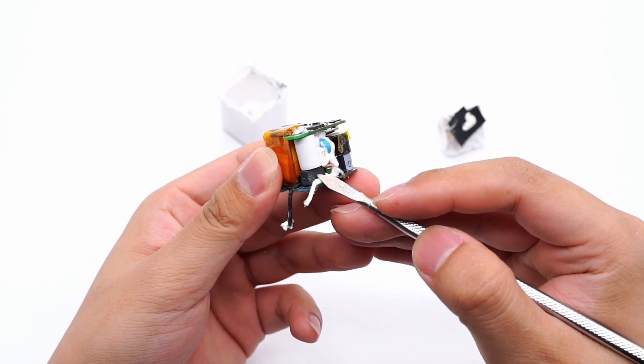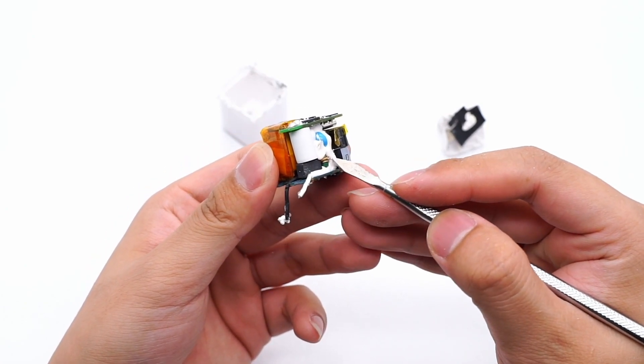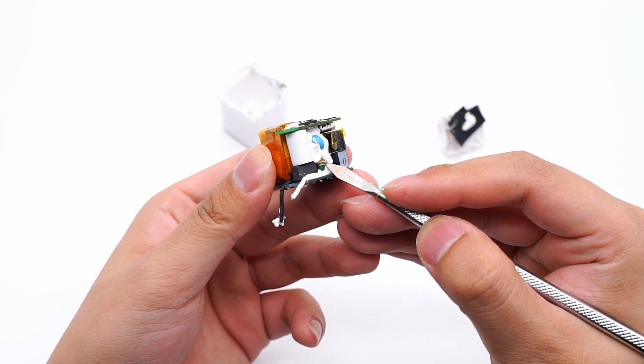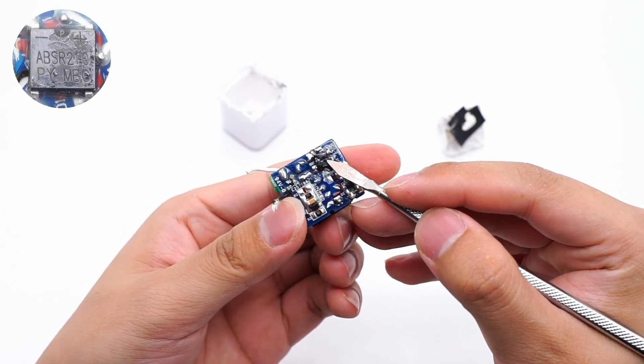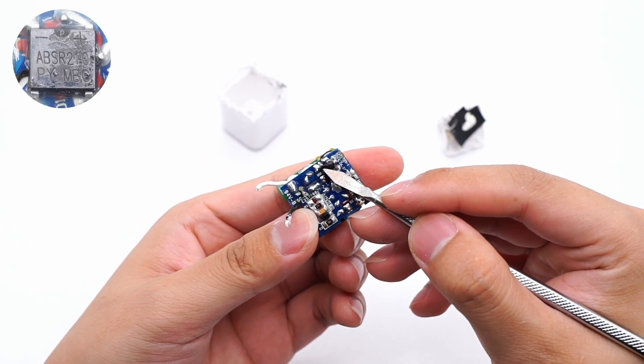This is a time-delay fuse 2A 250V. Here is a common-mode choke used to filter out EMI interference. This is a rectified bridge marked with ABSR210.